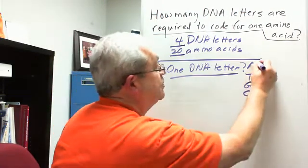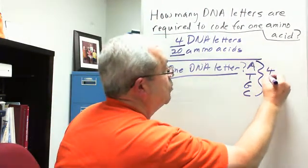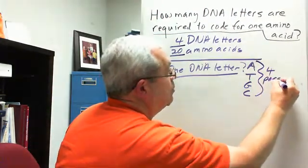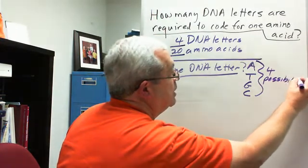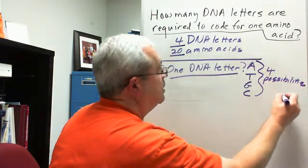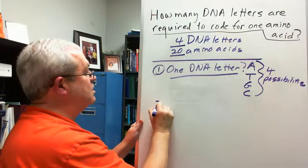That's four letters one at a time. How many possible things can you code for? Just four, right? Just four. That's not good. Four possibilities. Four possibilities.